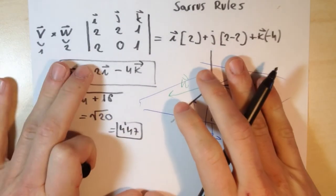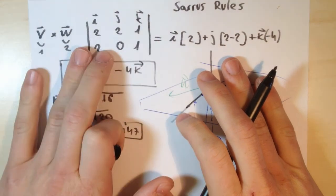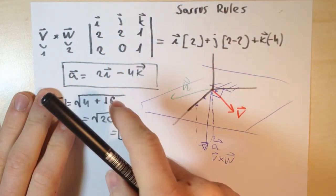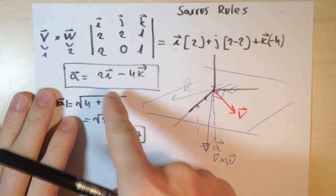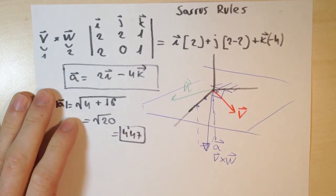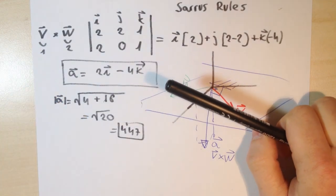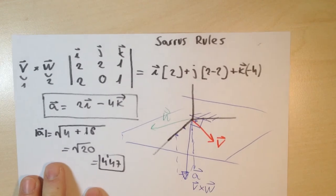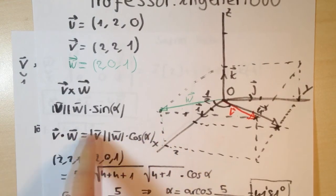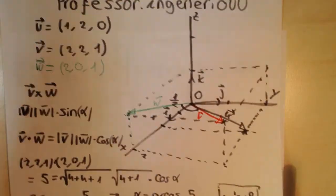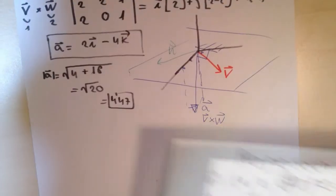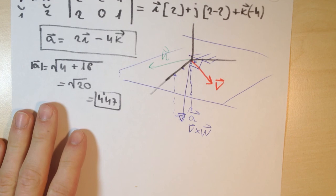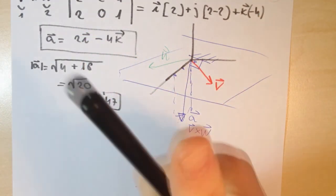To summarize, we have two methods: the definition method and the determinant method. I prefer the determinant method because you figure out both the vector and the magnitude, whereas with the definition you only get the magnitude. I will also make videos explaining the Sarrus rule and the dot product, and link them here. Best regards and have a nice day — ciao!